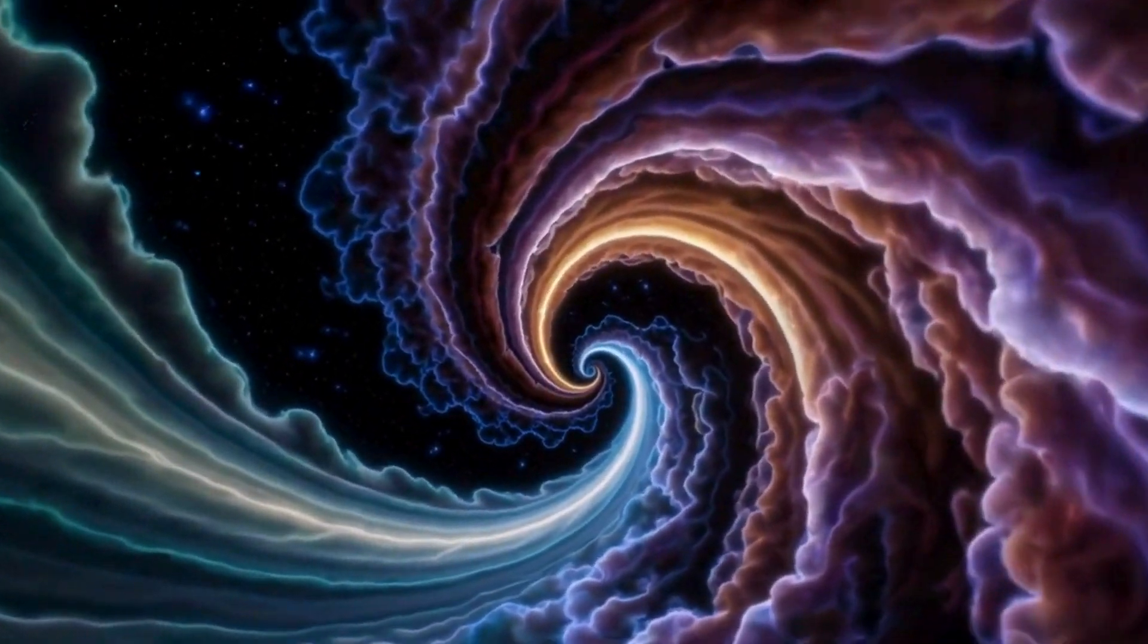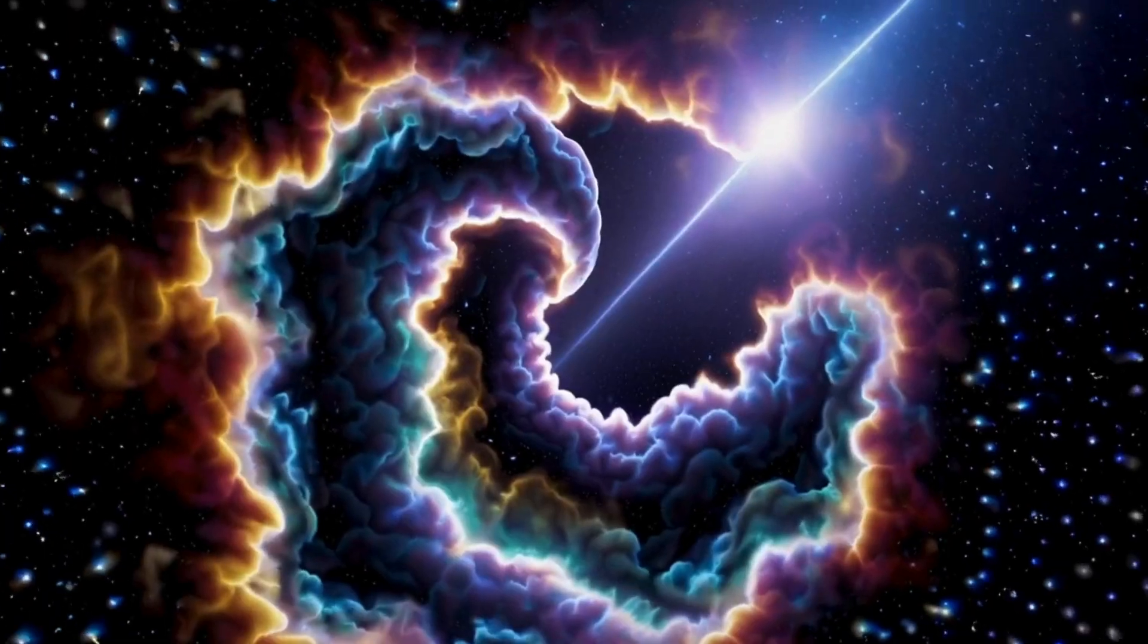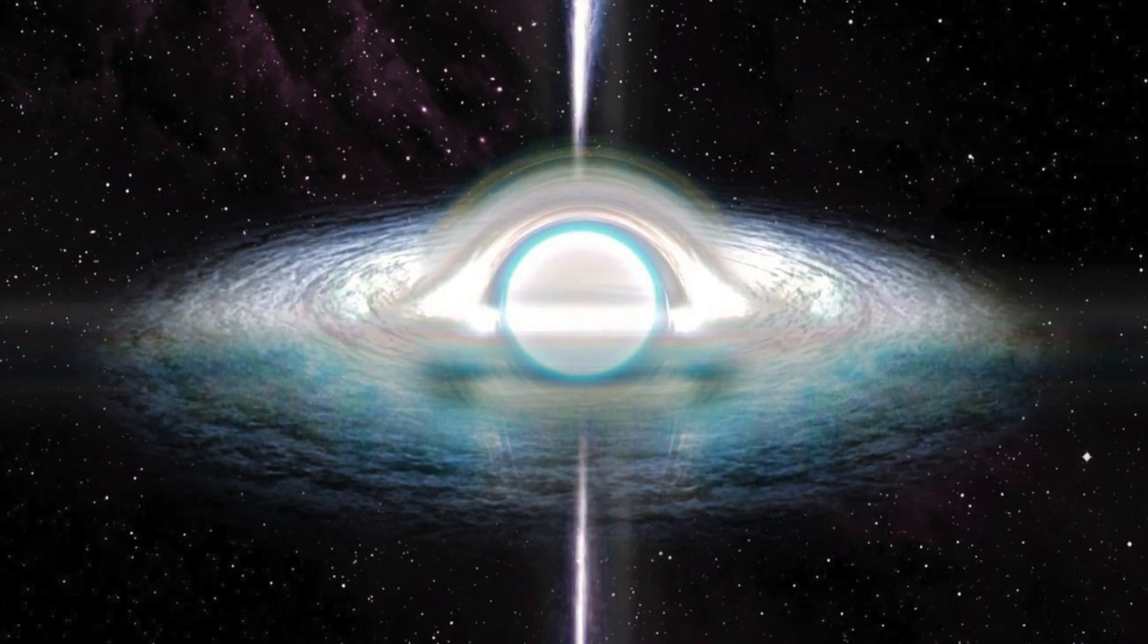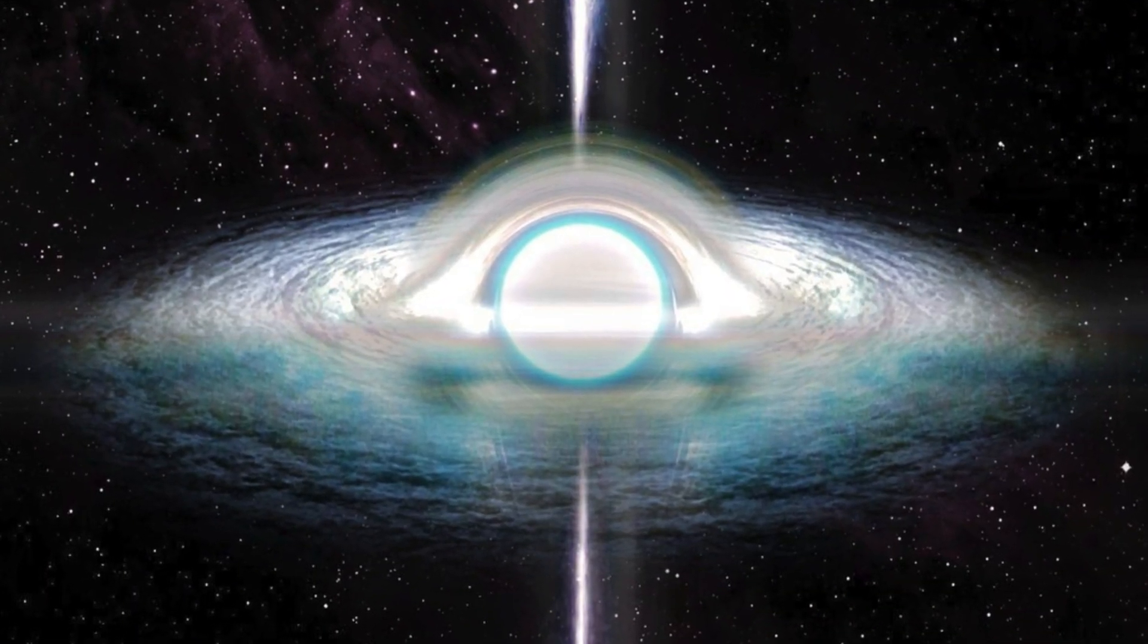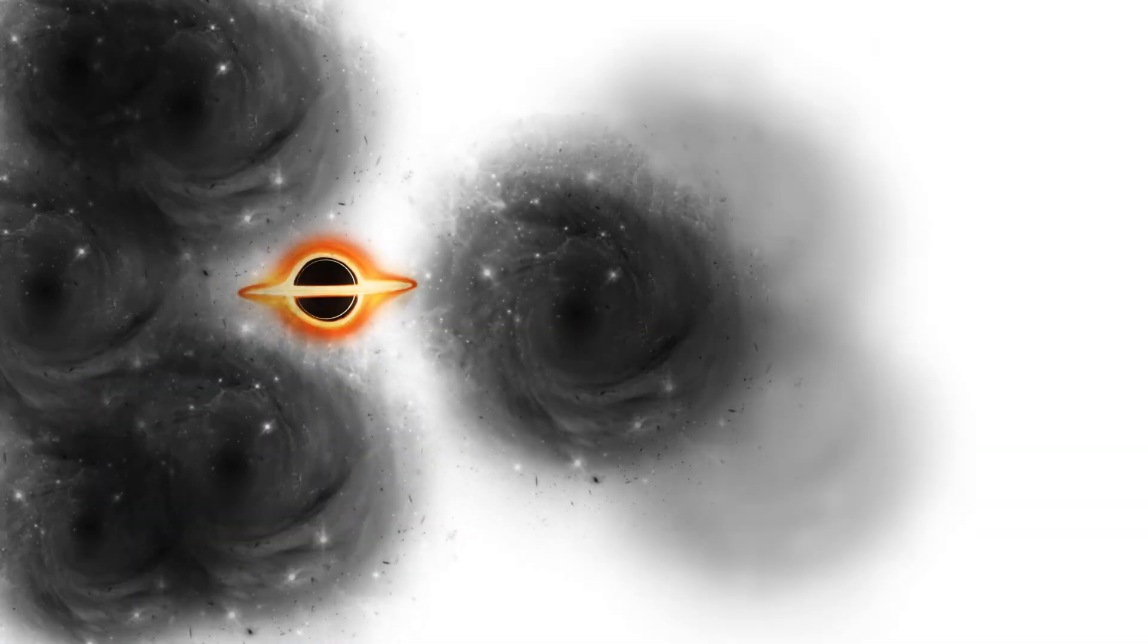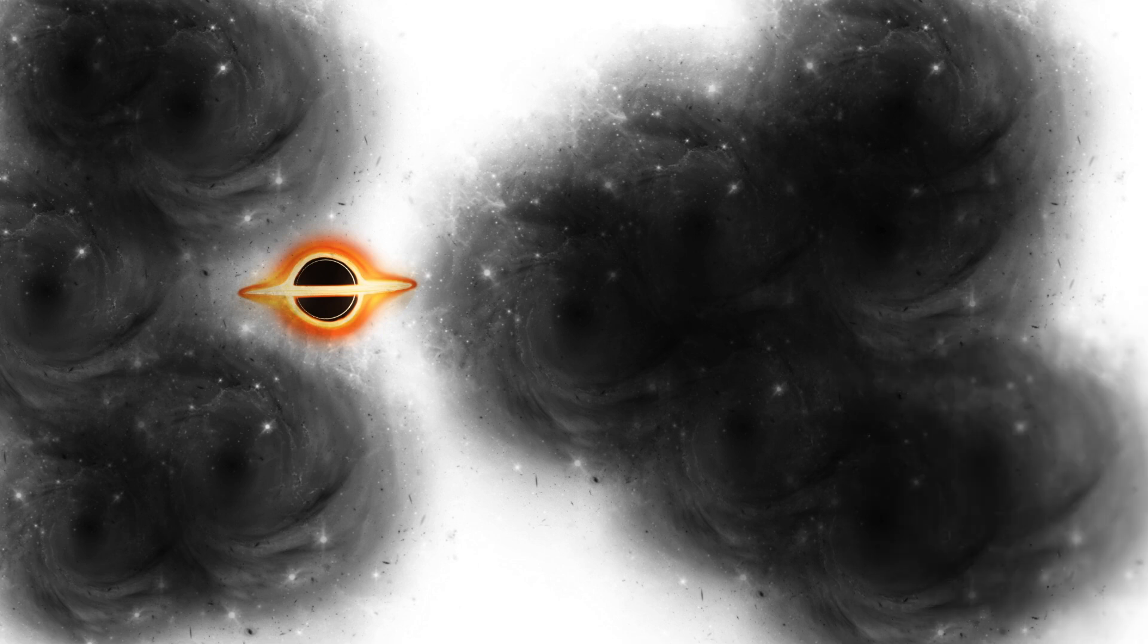Torsion-based models suggest black holes might avoid singularities through a rebound mechanism potentially birthing new universes. Our universe could have formed from matter rebounding inside a black hole from another universe.